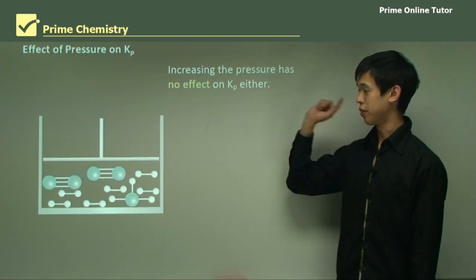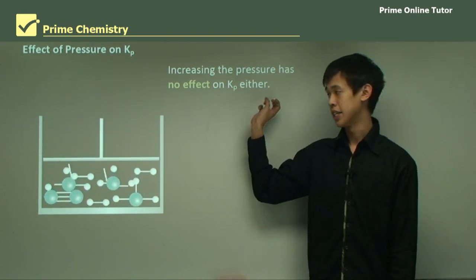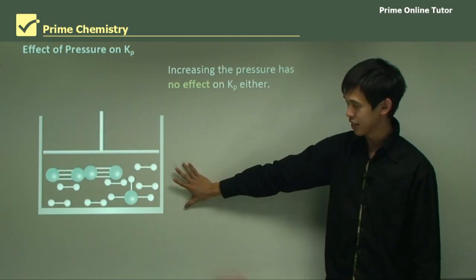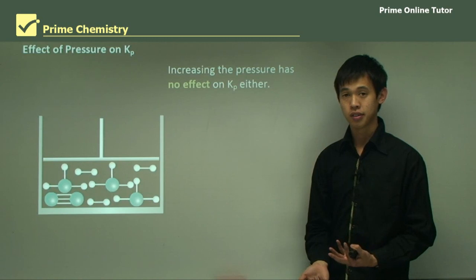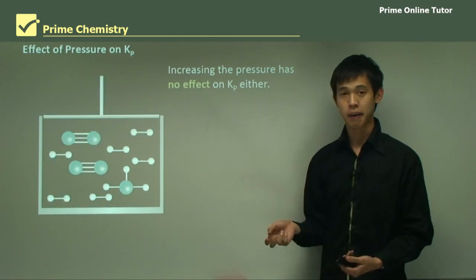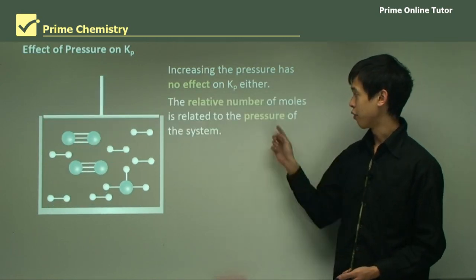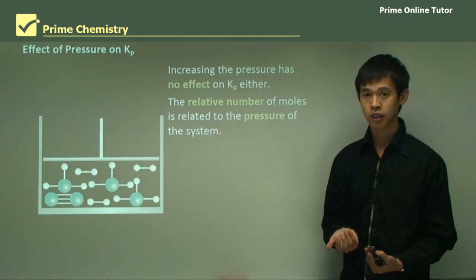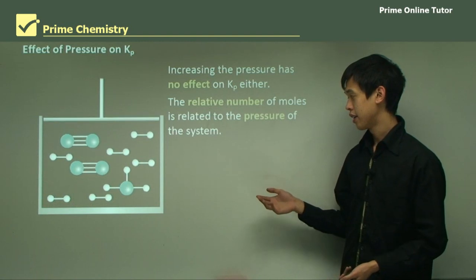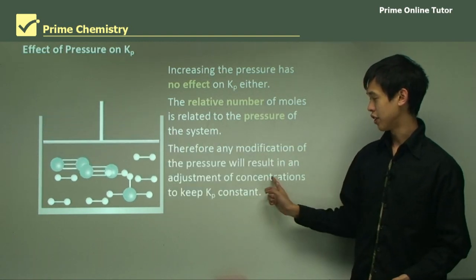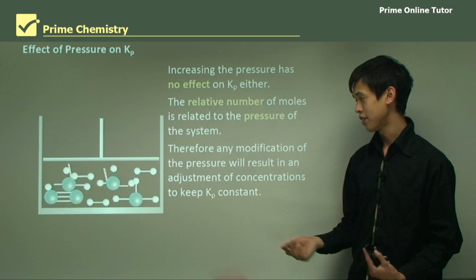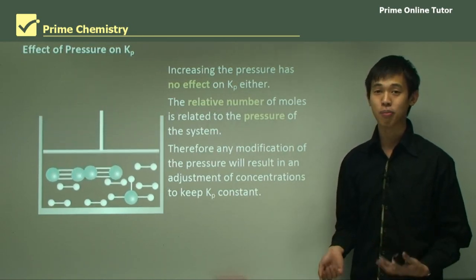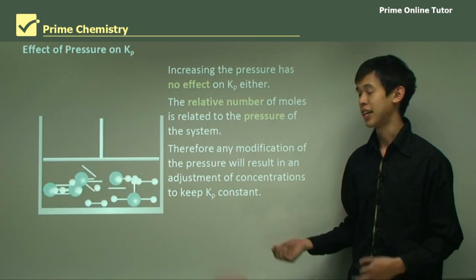So increasing the pressure also has no effect on Kp. So as you can see, when the piston comes down and compresses this gas, there's a readjustment of chemical concentrations to keep Kp the same. Now the relative number of moles in any system is related to the pressure of the system. So obviously, any modification of the pressure will result in an adjustment of concentrations to keep Kp constant. Remembering that Kp is trying to remain constant, because that is part of the definition.